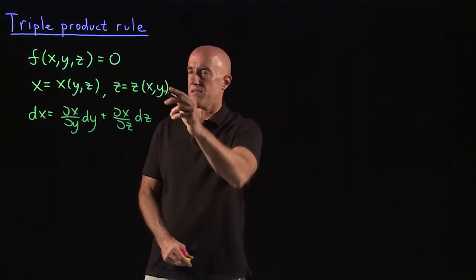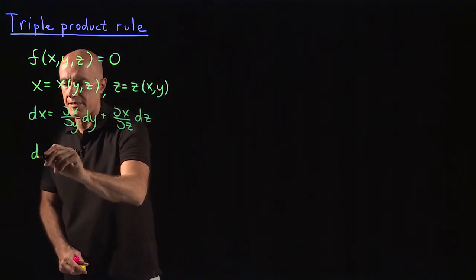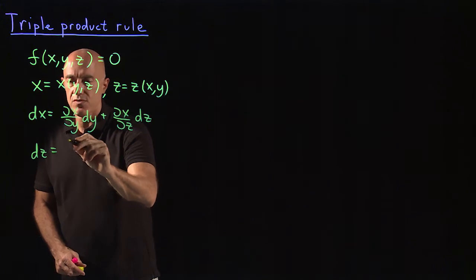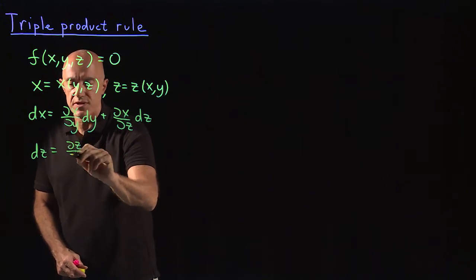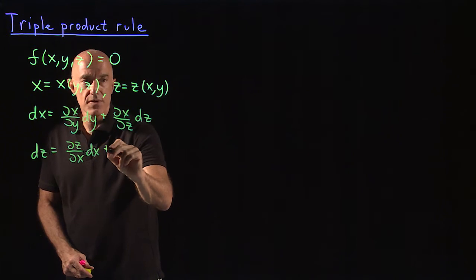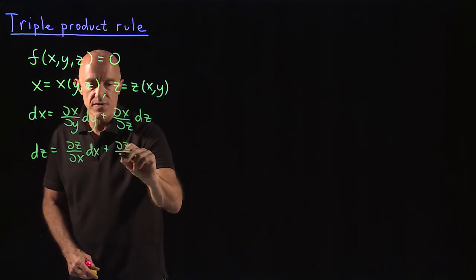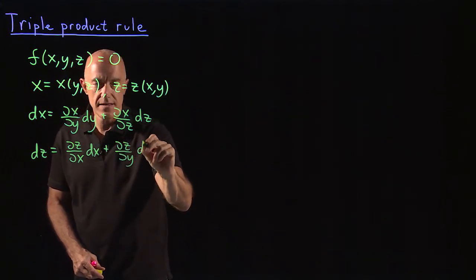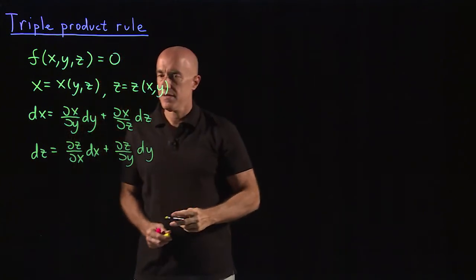And then we also have the differential of z, dz, is equal to the partial of z with respect to x dx, plus the partial of z with respect to y dy.